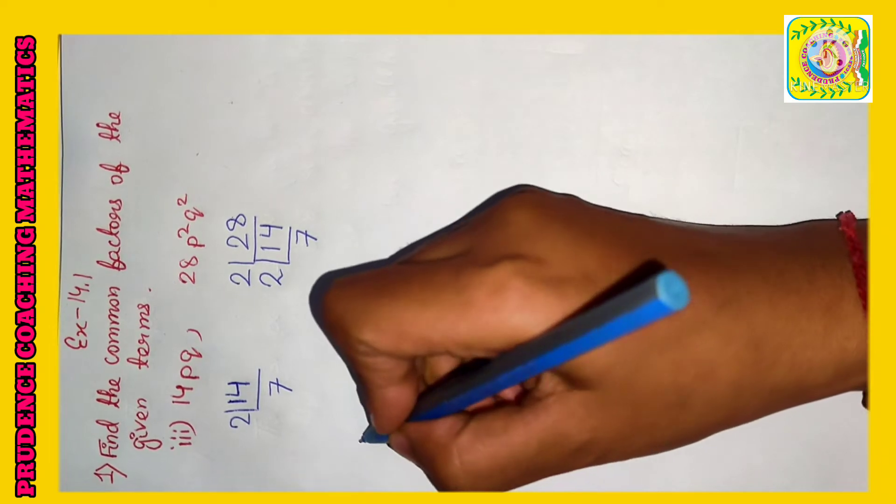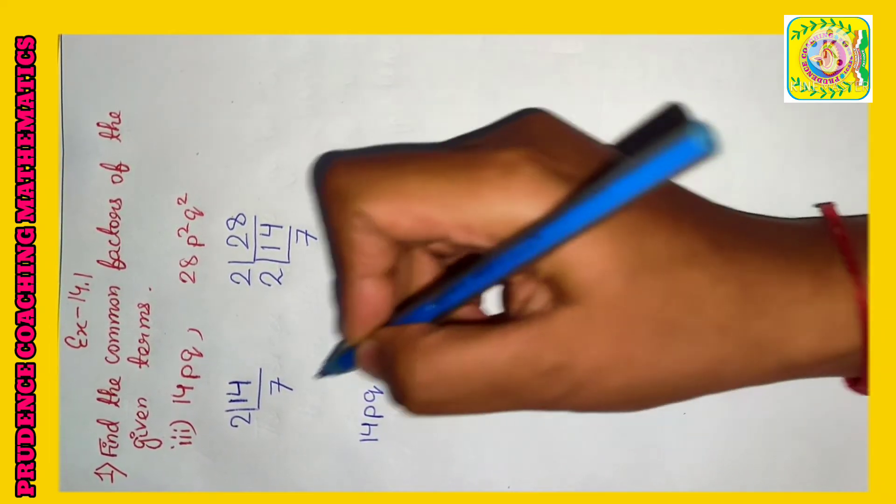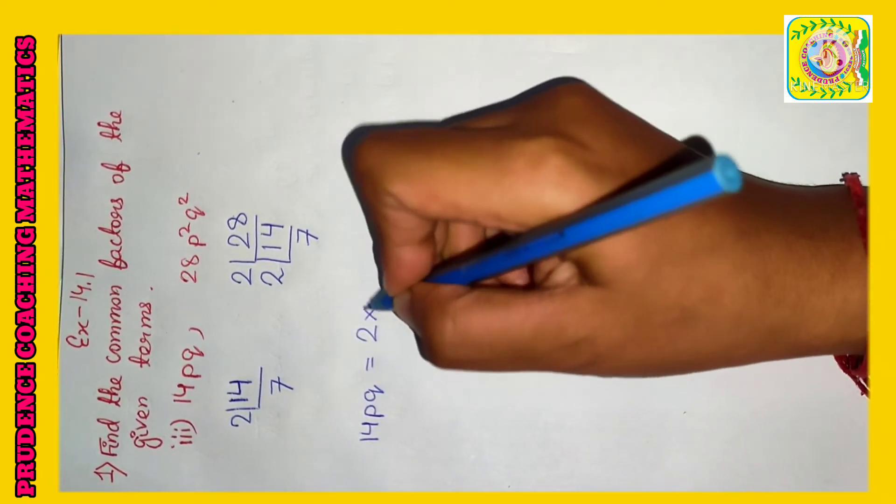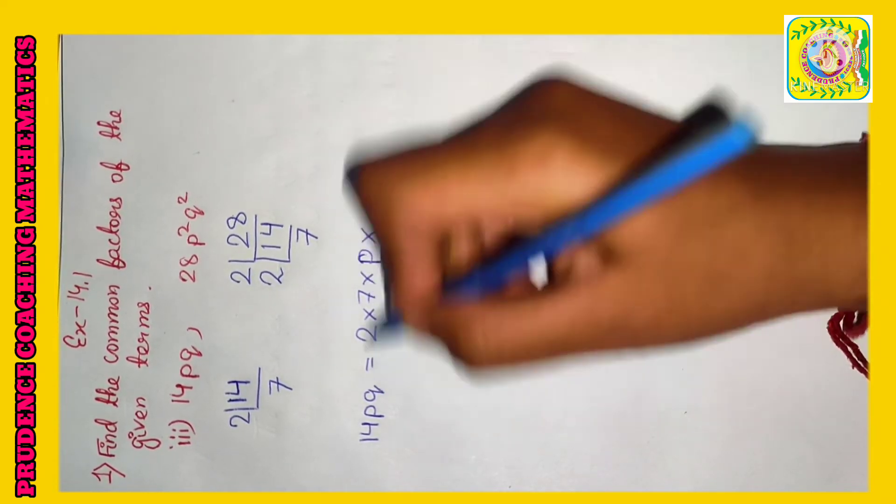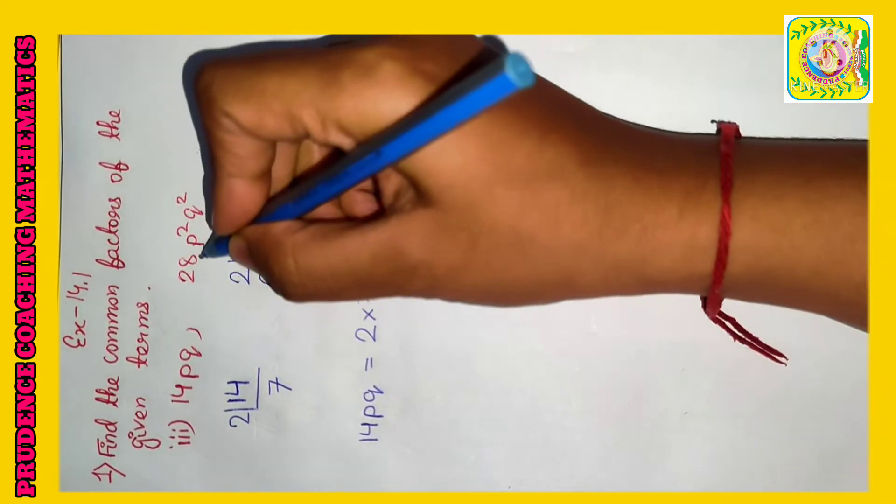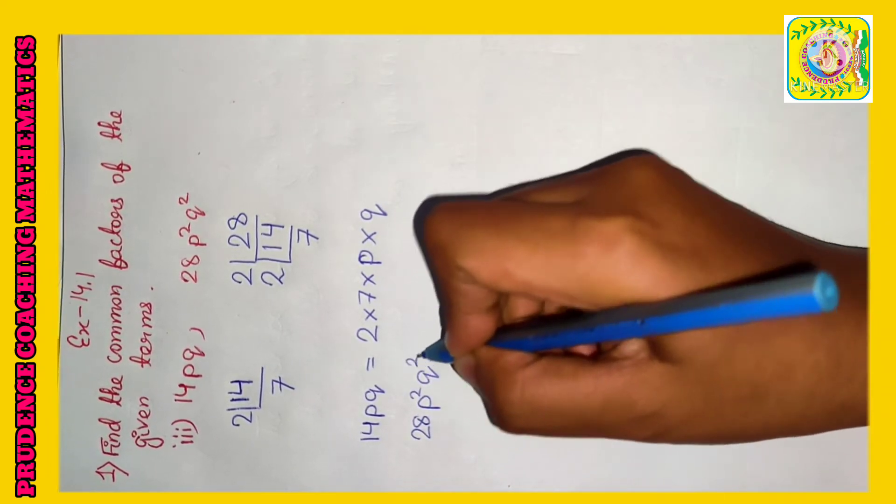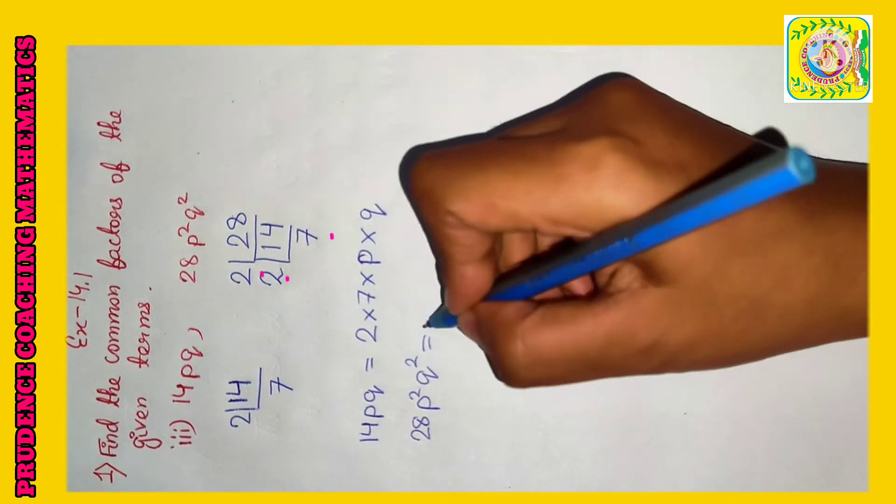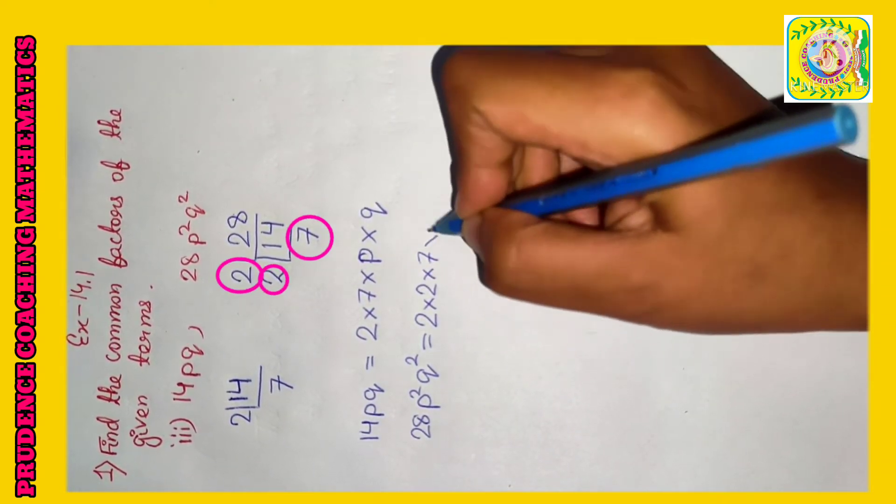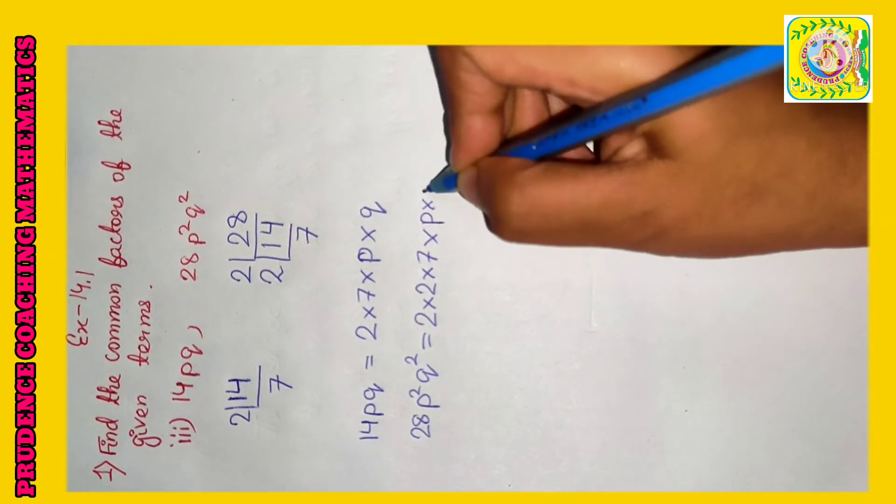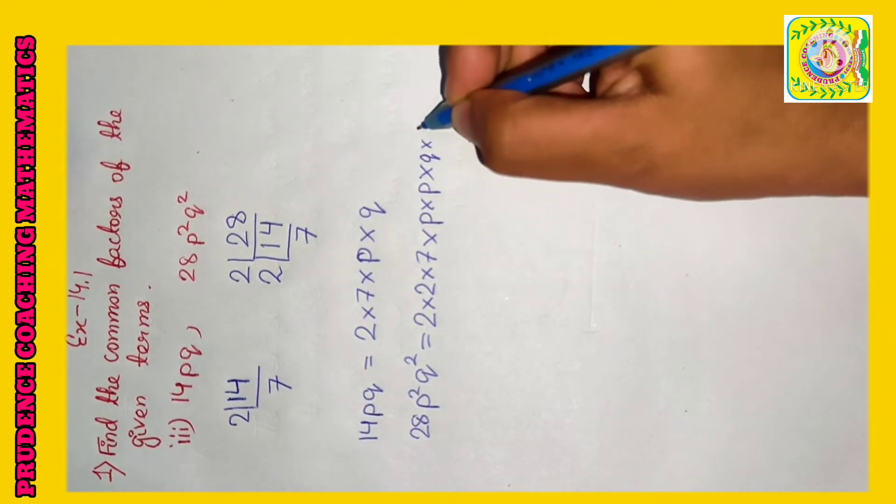So we can write 14pq as 2 into 7 in place of 14, into p into q. 28p square q square can be written as 2 into 2 into 7 in place of 28, into p square, so p into p, into q square, so q into q.